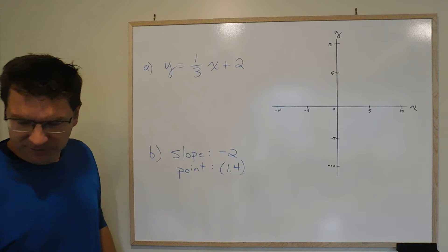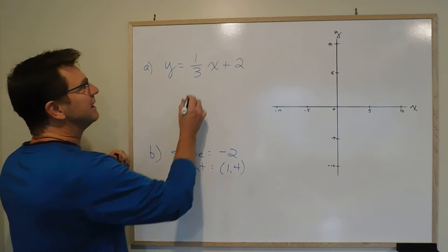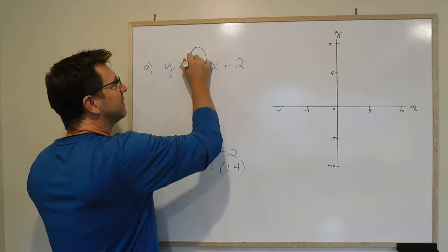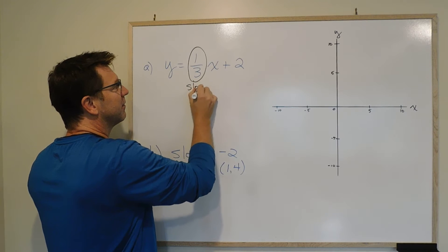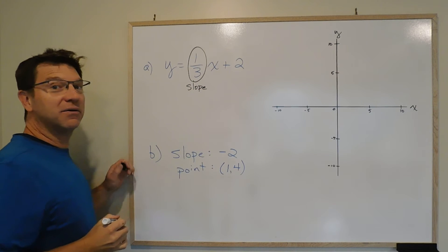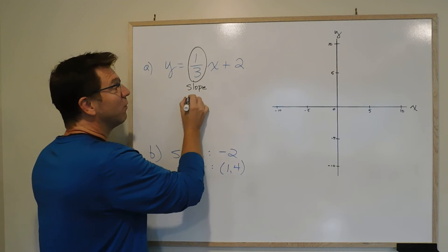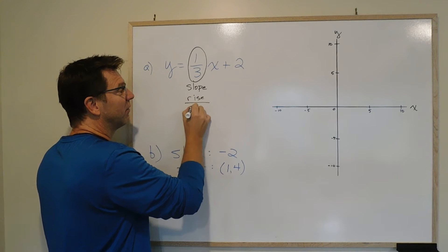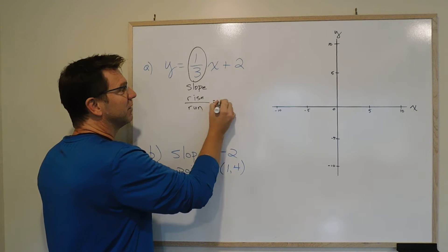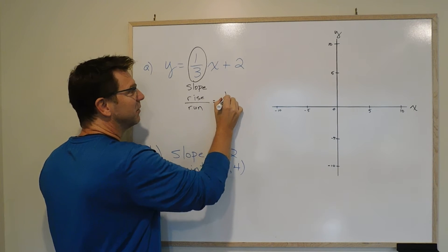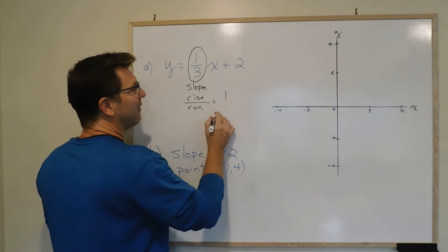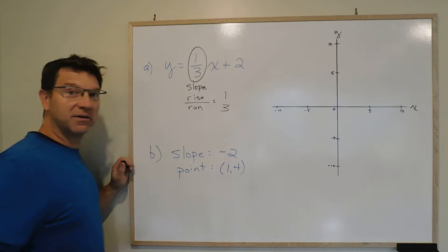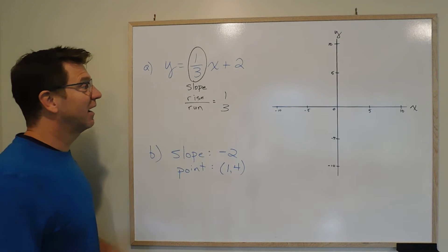So let's look at part A first. Part A, it tells us straight away this is the slope. Y equals mx plus b, m is the slope. We also know that slope is rise over run. So we know that the rise must be 1 and the run must be 3.